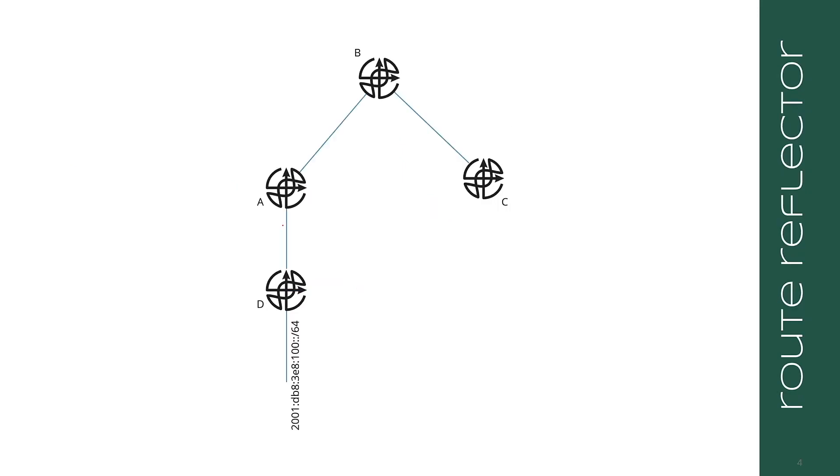Now, let's talk about route reflectors. Let's say that A, B, and C are in one AS, say AS 65,000, and D is in AS 65,001. So D is advertising 100 colon colon slash 64 to A through an EBGP connection. So this is EBGP right here. When A received this route, let's say that it has a route reflector B, which it is sending its routes to, which is going to reflect those routes to C.